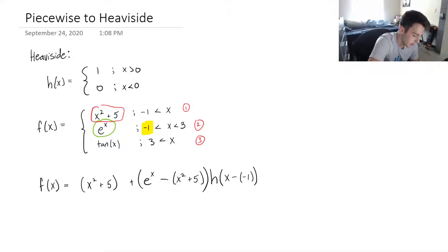And then we're gonna follow the exact same procedure for the next one. So plus—I'm gonna take my next function I'm turning into, which is tan of x, and then I'm subtracting the one that it just was, e to the x.